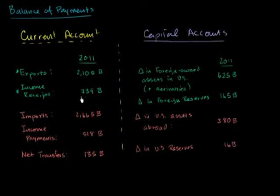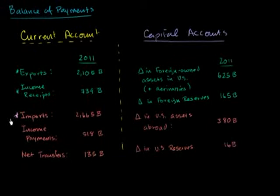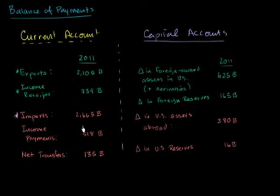Obviously, we're not just selling stuff to the rest of the world — the rest of the world is selling stuff to us. That's what imports are factoring in. The US actually runs a trade deficit; it imports more than it exports, to the tune of about $2.7 trillion. If we're buying other people's goods and services, we need to make payments to them — currency needs to go to them. That's why I've written it in orange.